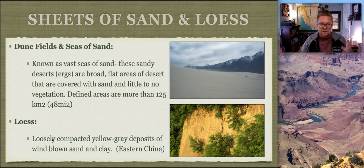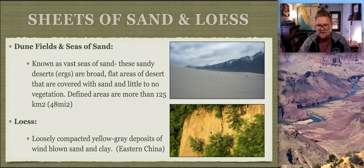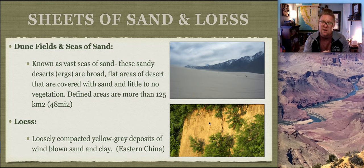Loess is a loosely compacted yellow-gray deposit of windblown sand and clay. Instead of being coarse-grained, this is really fine-grained material - kind of crumbly. It's sand and clay-based, compacted but very brittle - like a cake material that just goes poof into dust.